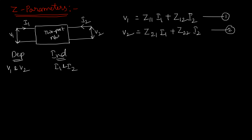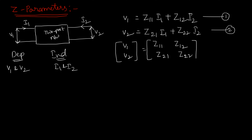These equations can also be expressed in matrix form. We write V1 and V2 as a column vector V, and Z11, Z12, Z21, Z22 form the Z matrix, and I1, I2 form the column vector I. So V = Z·I. The Z matrix is called the impedance matrix or square matrix.